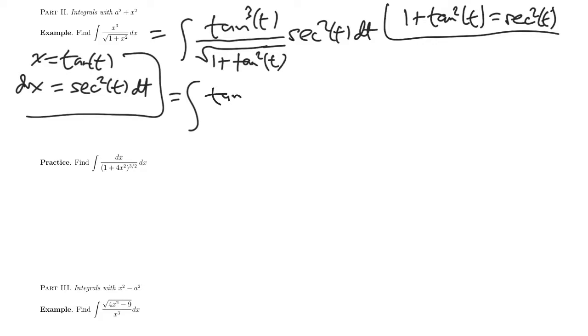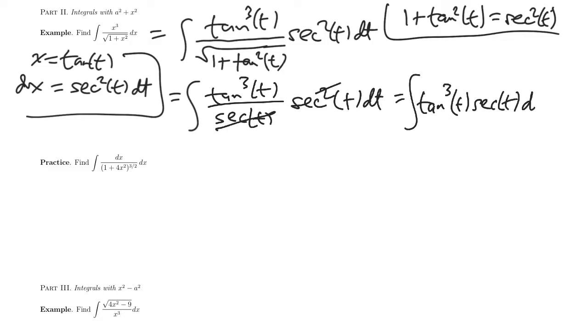So that will simplify in the denominator to just be secant of t. And everything else remains unchanged. Now we can cancel the secant t down here with one of these two secants in the secant squared. And so completely simplified and completely in terms of t, my integral is tangent cubed t times secant t dt.